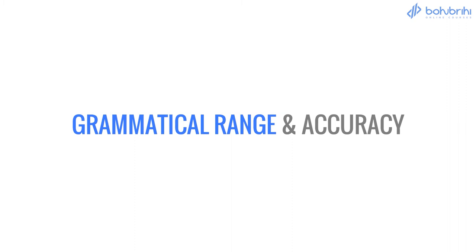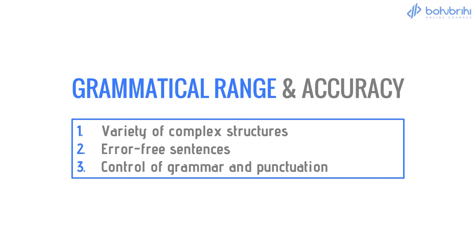Last but not least is Grammatical Range and Accuracy. Number 1 is Variety of Complex Sentences — you should use a range of sentence structures. Number 2 is Error-Free Sentences — try to avoid grammatical errors. Number 3 is Control of Grammar and Punctuation — use proper grammar and correct punctuation throughout your writing.